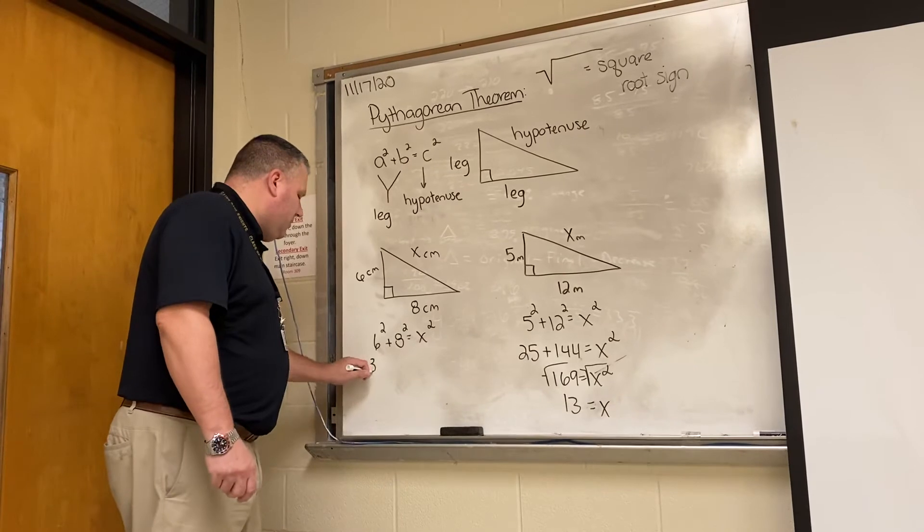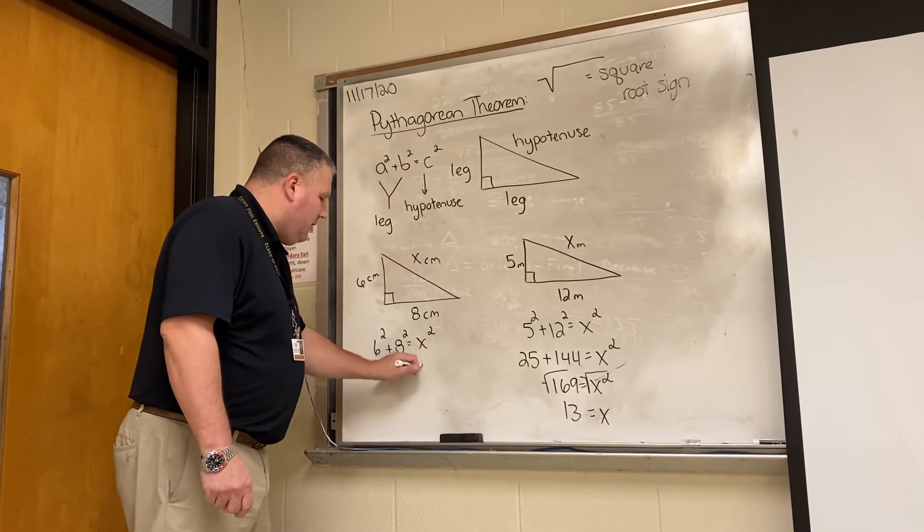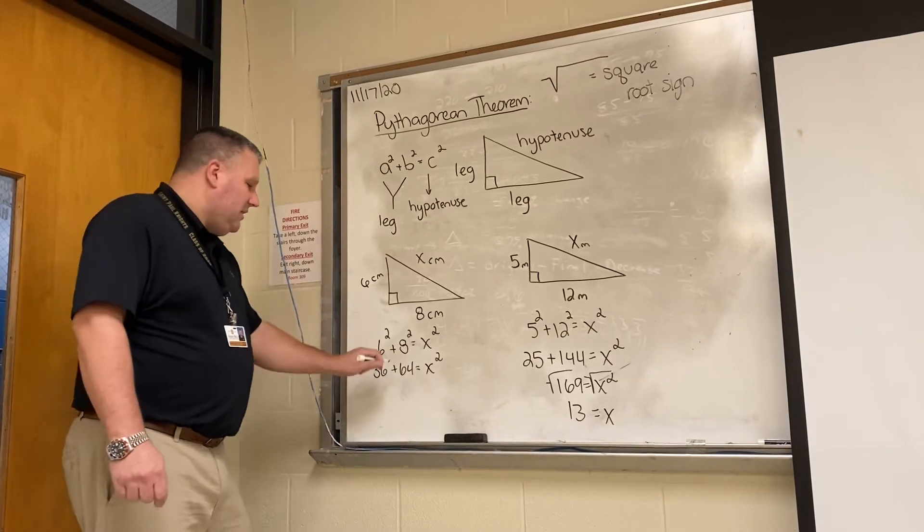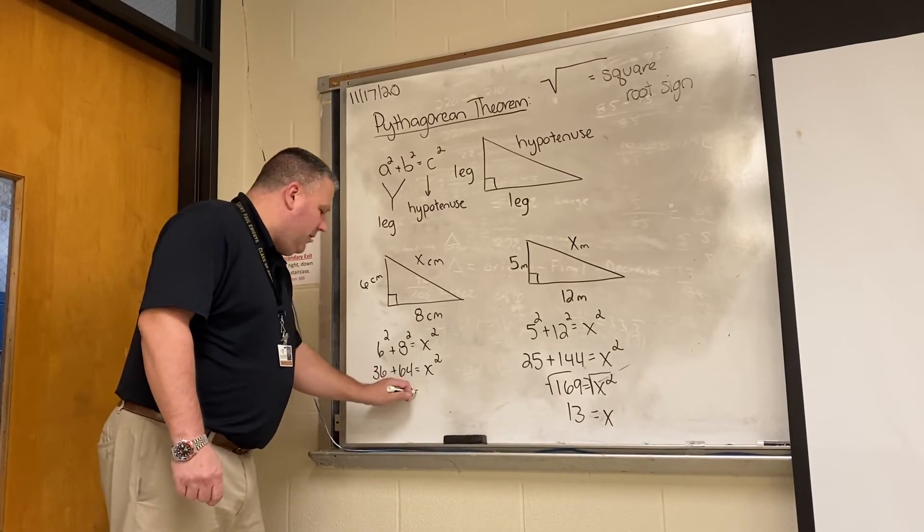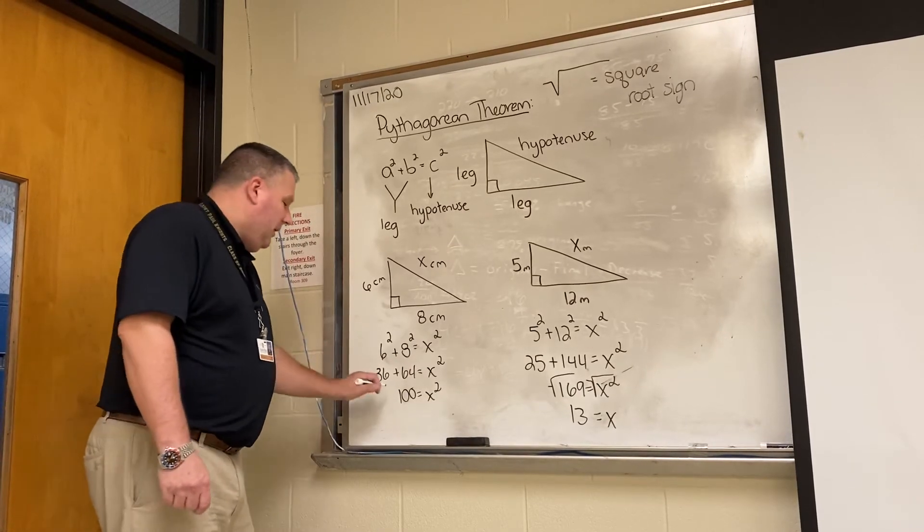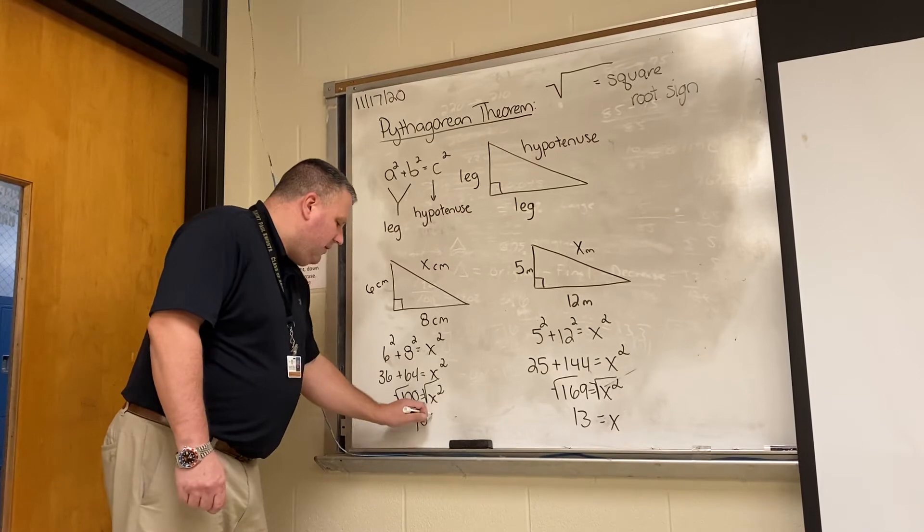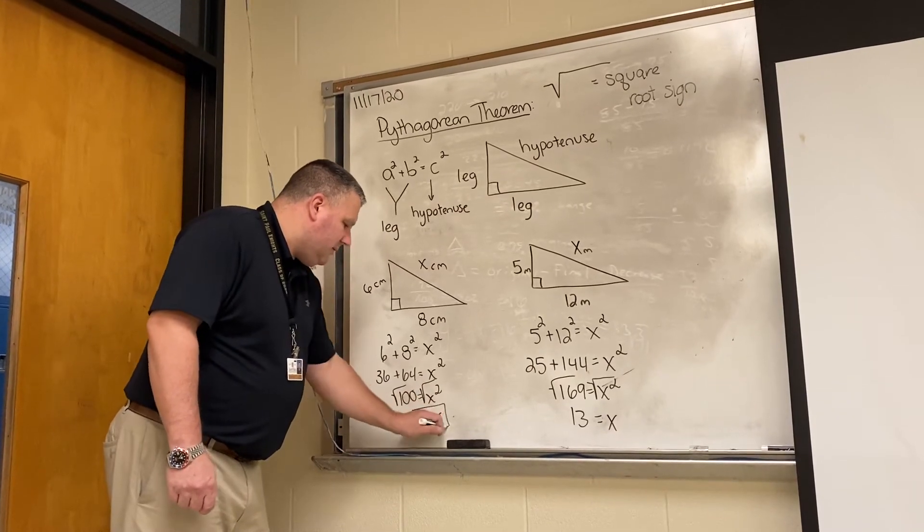6 squared is 36 plus 64 is equal to x squared. 36 and 64 is equal to 100 is equal to x squared. We need to take the square root of both sides. 10 is equal to x.